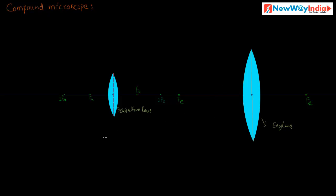This is the construction of a Compound Microscope. Now, if you place an object between the focal length of the objective lens and its center of curvature — for example, if you place a candle between the focal point and center of curvature of the objective lens — we get a magnified image like this.